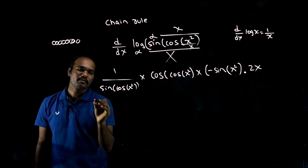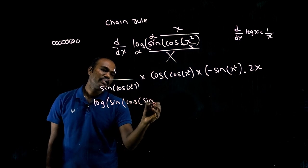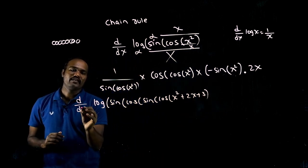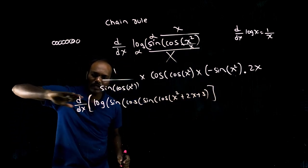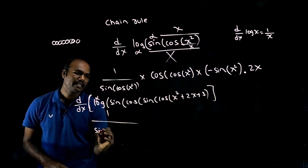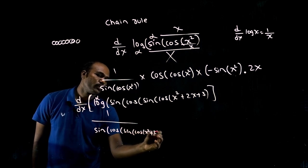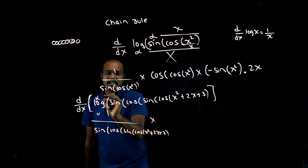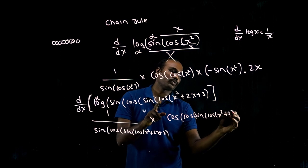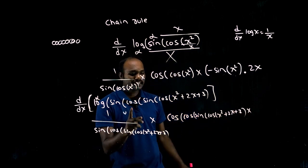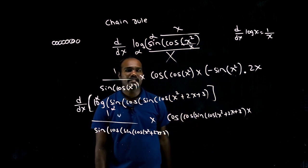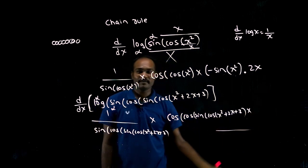I will take one more example: log of sine of cos of sine of cos of x squared plus 2x plus 3. We have to differentiate. Going from outside: first you see log. Log, you think this whole thing as x. So log x differentiation is 1 divided by the whole inside: sine of cos of sine of cos of x squared plus 2x plus 3. Done.